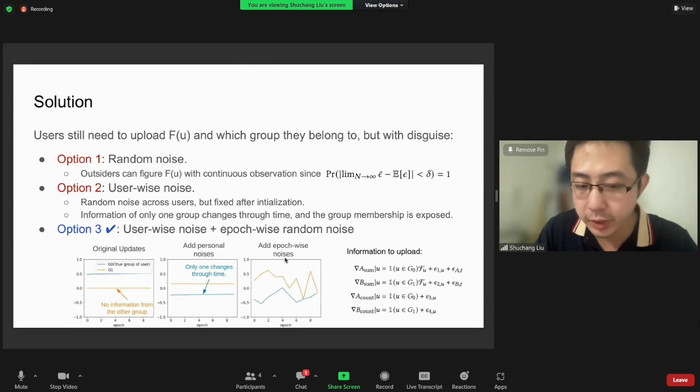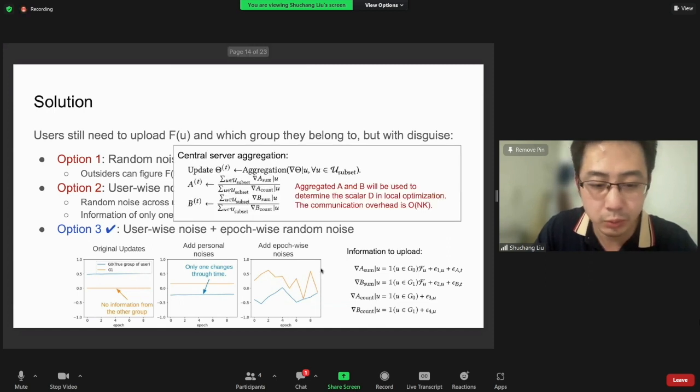As a solution, we need to combine two kinds of noises so that all the previous limitations are gone. Specifically, each local device needs to upload the summation and the counts—the updates of the summation and the counts of all groups—with a noise. Then the central server will calculate the corresponding statistics by the ratio of summation and counts.